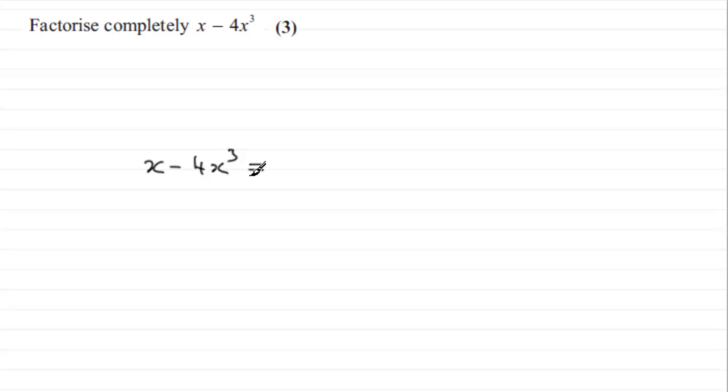What is this identical to? Well, first of all, I'd look for a common factor and that's going to be x. It's in both terms. So pull x out the front of a bracket and I'll have x times 1 to give me x and then minus 4x squared to give me 4x cubed.